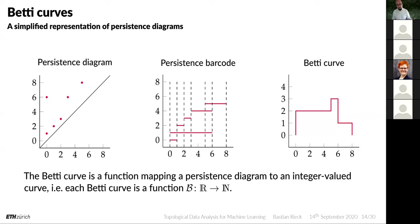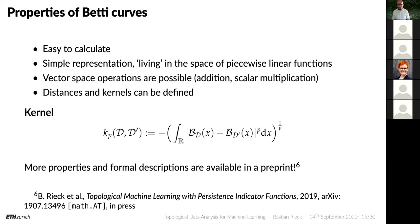This is a very simplistic way of representing a persistence diagram. Moreover, it's not an injective mapping — multiple persistence diagrams can map to the same Betti curve, so you lose representation power. But you gain other things: it's ridiculously easy to calculate, just go through a diagram once and you're done. What you get is a piecewise linear function, and piecewise linear functions give rise to interesting operations — you can add them, do scalar multiplications, and create mean functions.